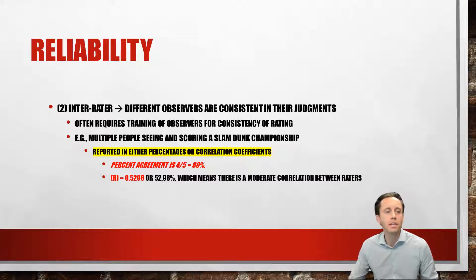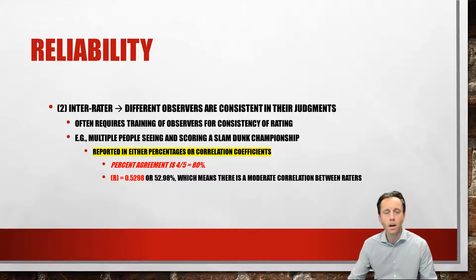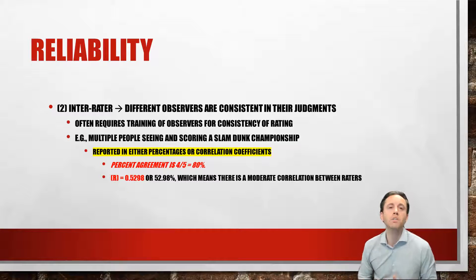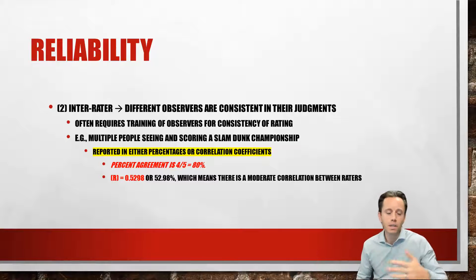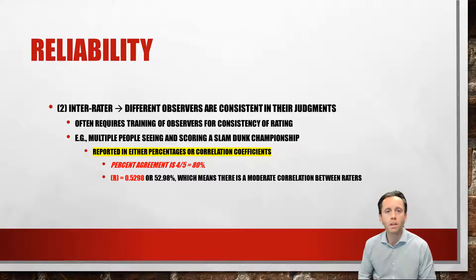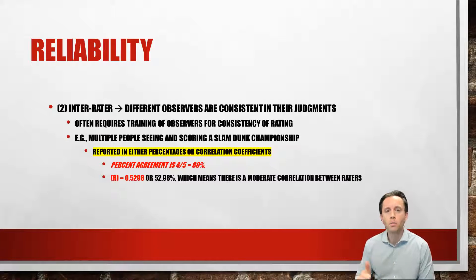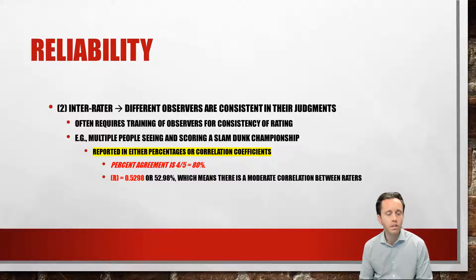The second kind of reliability is inter-rater, and that means that different observers are consistent in their judgments of the same phenomenon. Take, for instance, the slam dunk competition — somebody does a dunk, one judge gives a 10, somebody gives a 9, somebody gives a 5. What's going on there? It turns out that training should be done for observers in order to ensure high levels of inter-rater reliability.